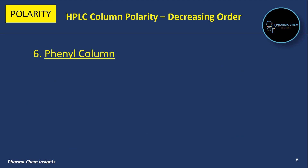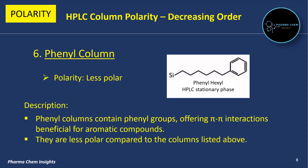Sixth is the Phenyl column. Its polarity is less polar. Phenyl columns contain phenyl groups offering pi-to-pi interactions, which are beneficial for aromatic compounds. They are less polar compared to the columns listed above.